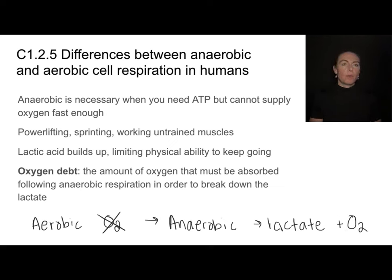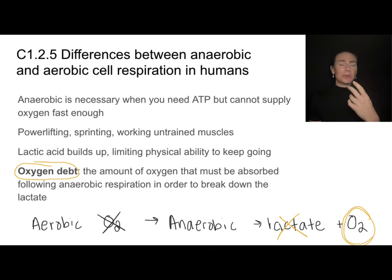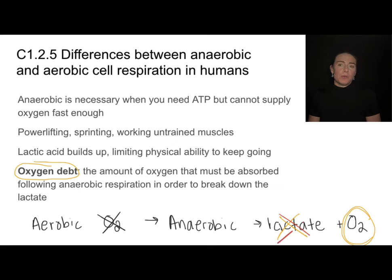The oxygen we must absorb in order to break down this lactate is called oxygen debt — the amount of oxygen you must absorb following anaerobic respiration to break down the lactate. The unfortunate part is that we've already converted glucose into lactate and only gotten 2 ATP. Now that we have oxygen, we're not getting any more ATP out of the lactate — it's just what we need to break it down. This is a relatively inefficient pathway.